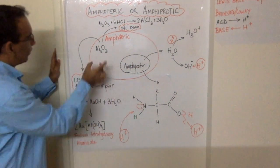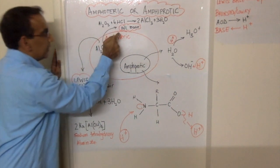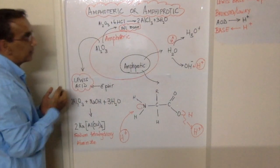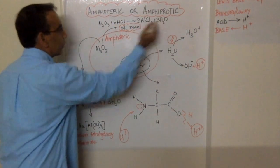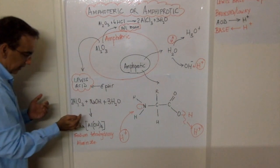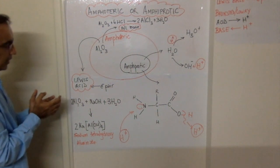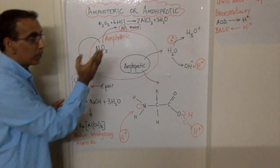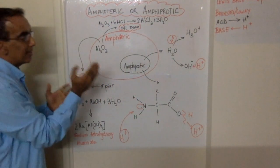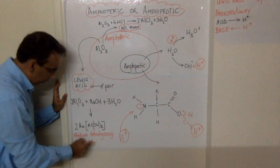Take the example of aluminum oxide. When reacted with hydrochloric acid, it can behave as a Brønsted-Lowry base and accept the hydrogen from hydrochloric acid, forming aluminum chloride and water. But when aluminum oxide reacts with sodium hydroxide, it forms sodium tetrahydroxy-aluminate — not because it donates a proton as a Brønsted-Lowry acid would, but instead it behaves as a Lewis acid, accepting an electron pair and forming the complex sodium tetrahydroxy-aluminate.